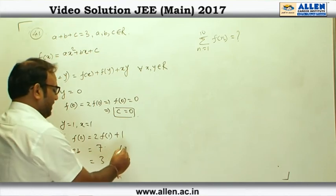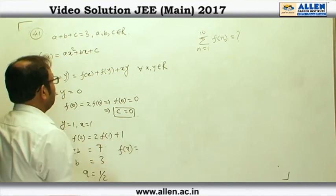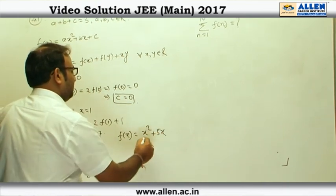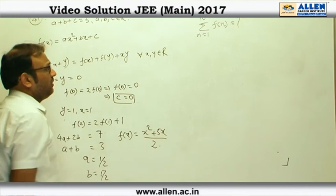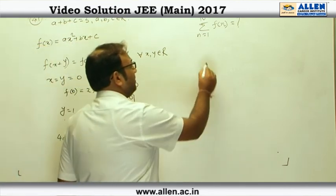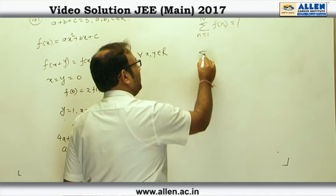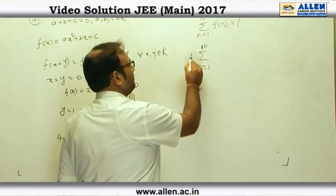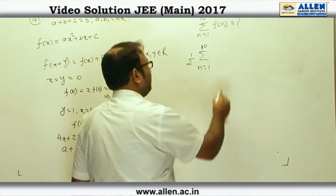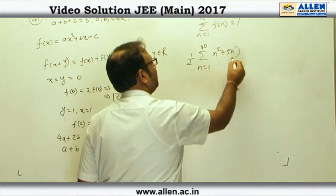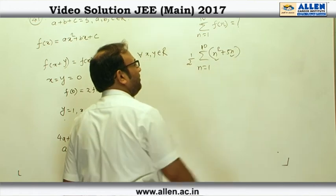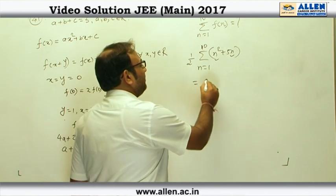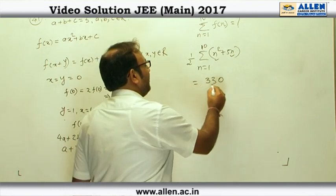So, from here our quadratic is f(x) equal to x²/2 plus 5x/2. And in the bracket we are left with n² plus 5n, and for n² and for n, we have got the formula. We can just substitute that formula here and by calculating we get 330 as the answer.